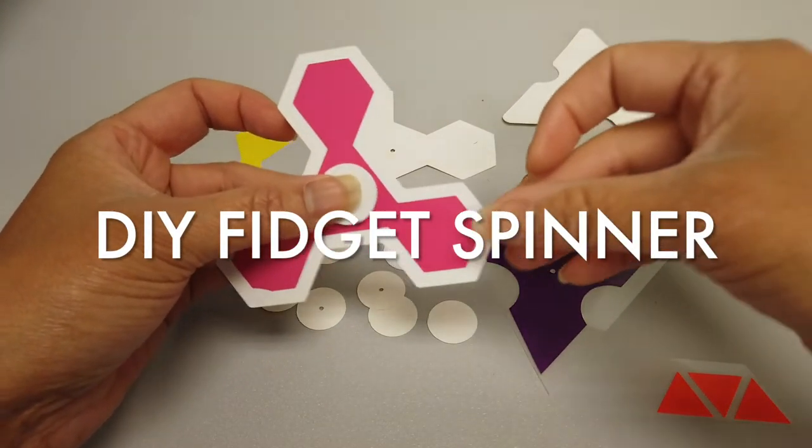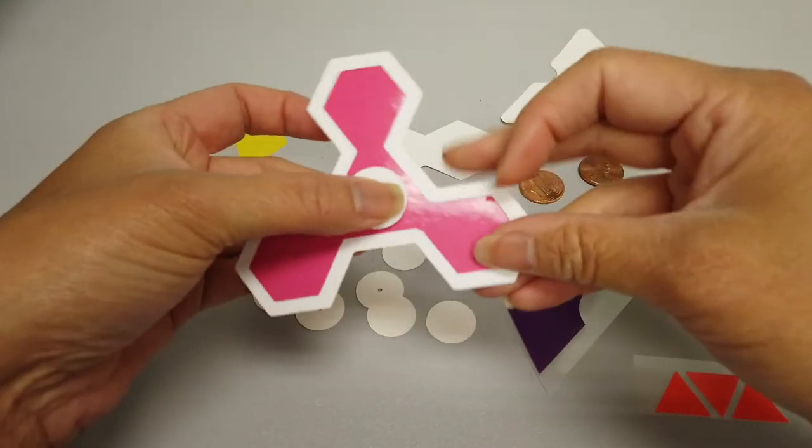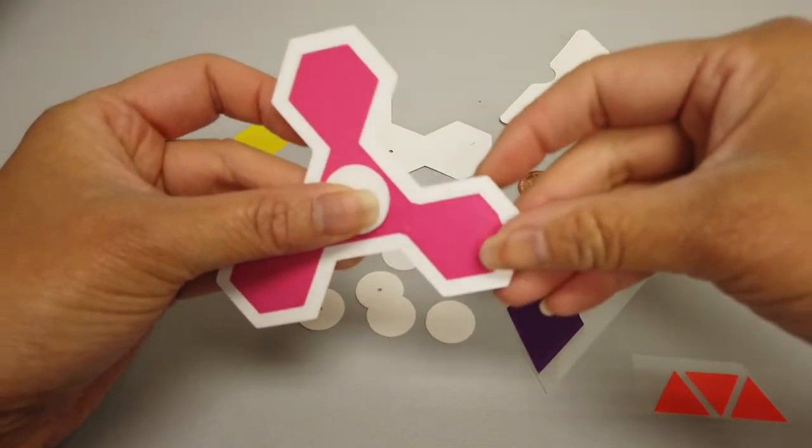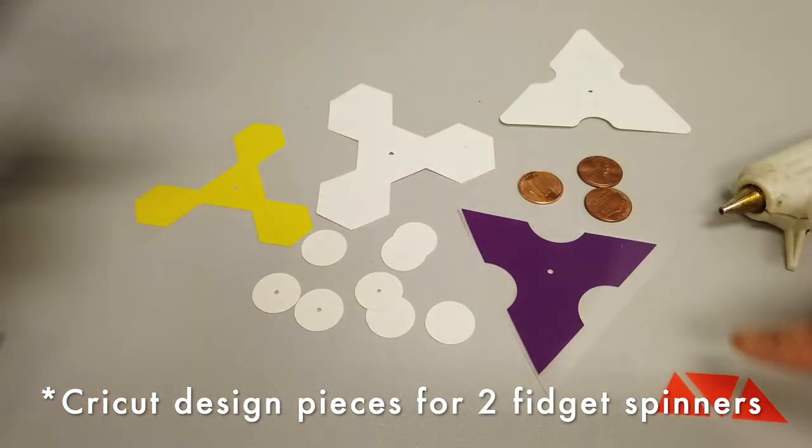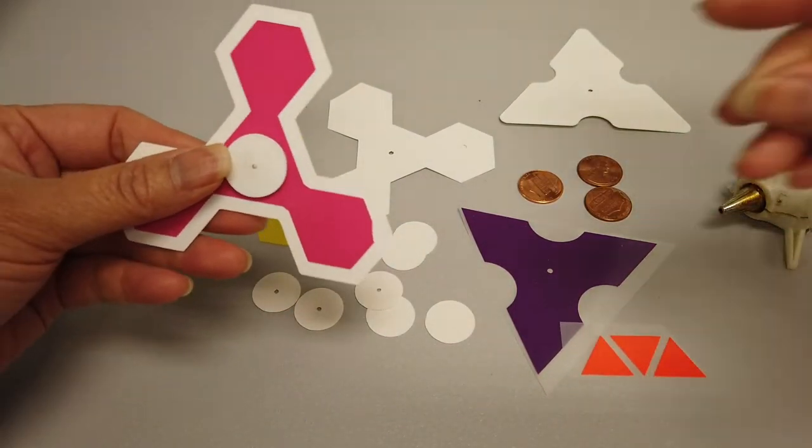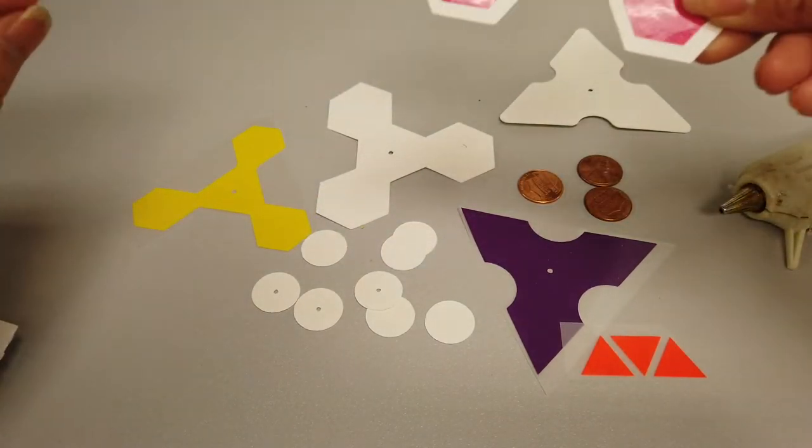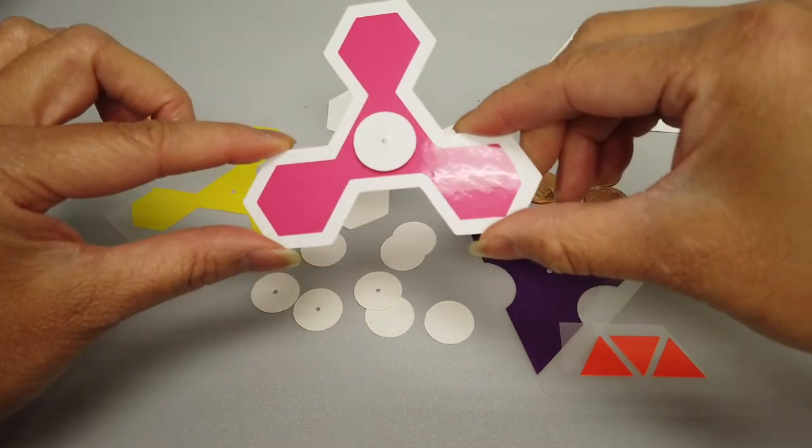In this video I'm going to show you how to put together a DIY fidget spinner. I actually cut this out on my Cricut. I have all of the pieces that I need here and I will put the Cricut design in the comments or in the description so that you can see it.